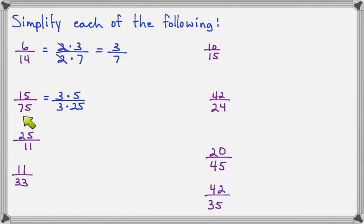Okay, on 15 over 75, 15 is 3 times 5. 75 is 3 times 25. And so now I can cross out the 3s. And notice that 25 can be written as 5 times 5. So I have to do that as well. So now I'm going to cross out the 5s. And so I end up with one fifth.